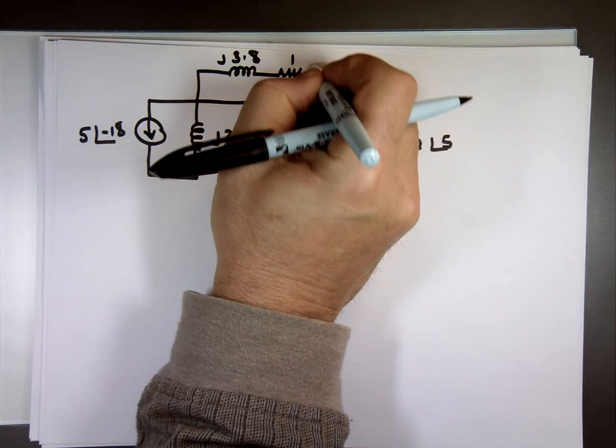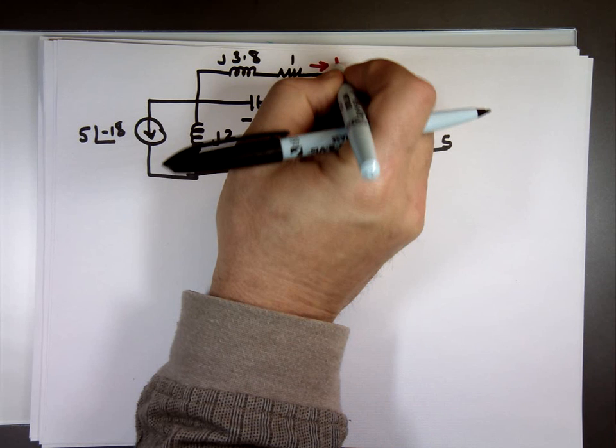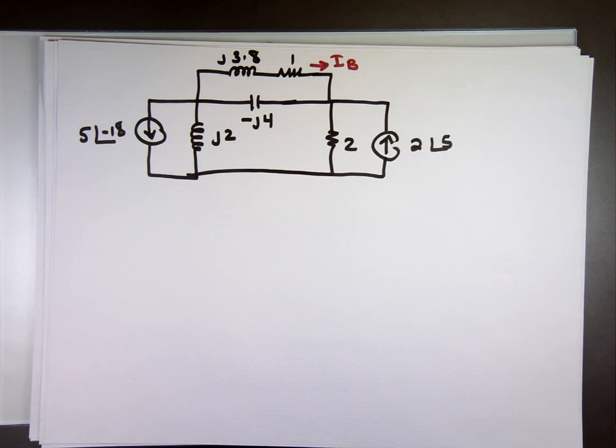And the question, what's the current in the top branch? We'll call that I sub B. What is I sub B?